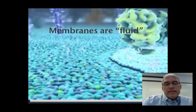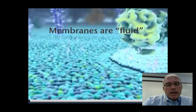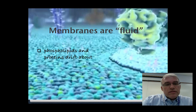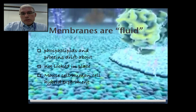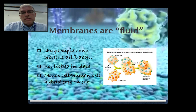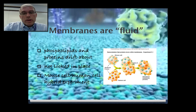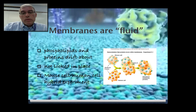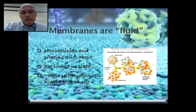Membranes are fluid, meaning the phospholipids and proteins are constantly in motion, moving around in relationship to each other — floating in raft-like structures as seen in this slide. Phospholipids and proteins drift about; they're not locked in place. This was proven with a hybrid experiment between mouse and human cells. When the two cells fuse together, the intermixed mouse and human protein molecules prove that proteins move around. If they didn't, the hybrid would remain half mouse and half human with distinct parts — but we know they mix.